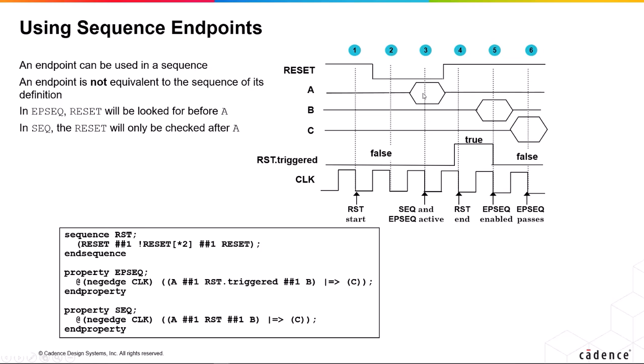If we have A occurring and we have the RST triggered the next cycle followed by B, then C has to be true in this cycle. So this property here, EP seek, this starts in cycle three, that's when it becomes enabled. It passes in cycle six. However, we had to have been looking at the reset signal all the way back at cycle one in order to know that it passed. So we're having to evaluate RST triggered every cycle basically, regardless of whether this property evaluation is underway or not.